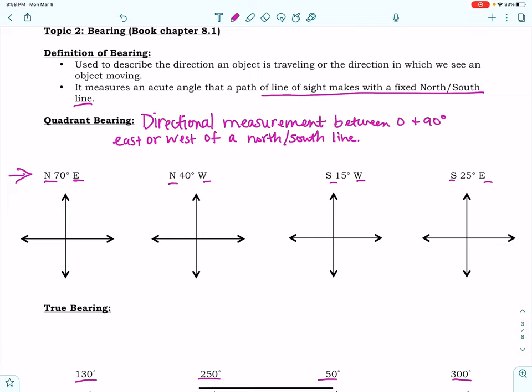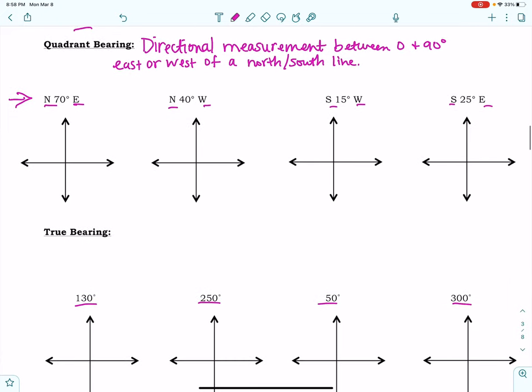Okay? So, when we are working on quadrant bearings, the very first thing we're going to do when looking at these is we're going to label north, east, west and south. So, that is where we're going to start. Alright, so I'm going to do that for each of these. Because that's going to help us draw in our bearing angle. And yes, it will always be like this.